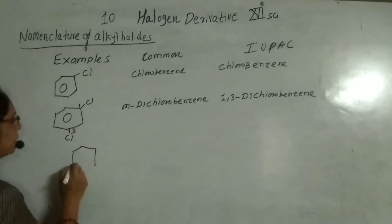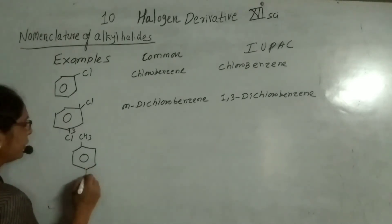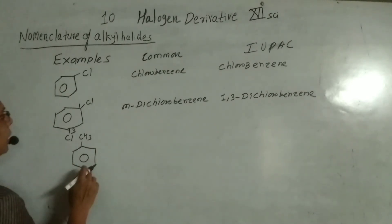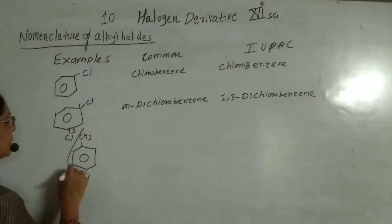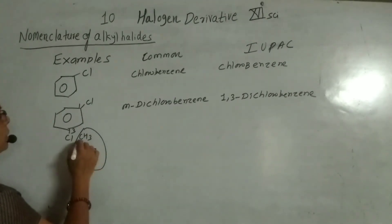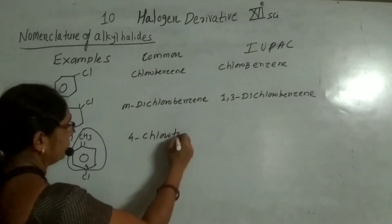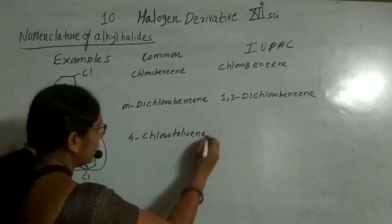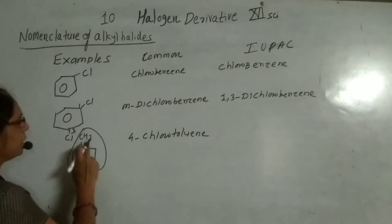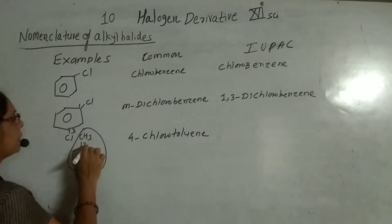The next example is a derivative of toluene. With respect to toluene, chlorine is at position 4 — that is the 1,4 position — so its name is 4-chlorotoluene. If you write the name in the form of benzene, you may also express it with appropriate numbering — halogen first, then the substituent.